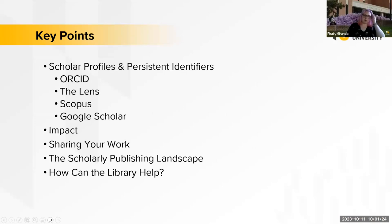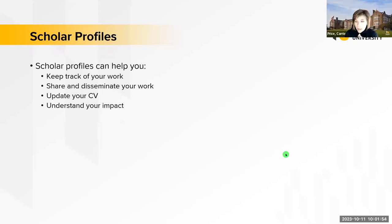Today we're going to cover a few different key points, all about increasing the visibility and discoverability of your research — more places you can put it. We're going to talk about scholar profiles and persistent identifiers, talk a bit about impact, then sharing your work more broadly, and then the scholarly publishing landscape. We'll wrap up by pointing out some library resources that can help. We encourage you to use the chat, and feel free to unmute yourselves — we'd like this to be interactive.